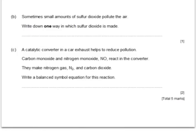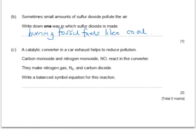Here's another question from a different paper. Sometimes small amounts of sulphur dioxide pollute the air. Write down one way in which sulphur dioxide is made — for example, burning fossil fuels like coal. A catalytic converter in a car exhaust helps to reduce pollution. Carbon monoxide and nitrogen monoxide NO react in the converter and make nitrogen gas and carbon dioxide. Write a balanced symbol equation for the reaction. We start on the left-hand side with carbon monoxide, CO, plus nitrogen monoxide, for which we're given the formula, and they make nitrogen gas and carbon dioxide, which we have to remember.